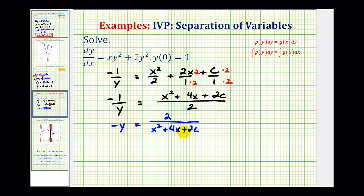And now we can just multiply both sides of the equation by negative one, giving us our general solution of y equals, let's make the numerator negative, so negative two all over x squared plus four x plus two c. Now I could replace two c with c sub one or c sub two. I'm going to leave it in this form though, because remember now we actually want to find the value of c to find the particular solution and solve this initial value problem.